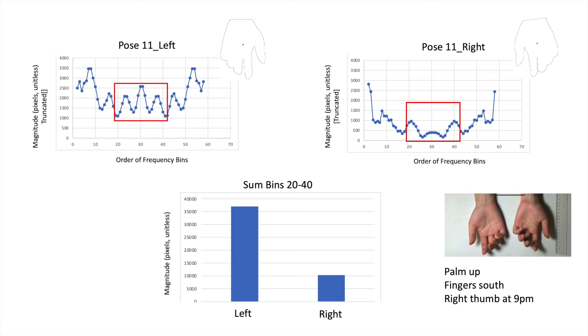For pose 11, what I did was I flipped my hands so the palms are up, fingers point south, and the right thumb is at 9pm. After outlining the hands and doing the analysis, the index shows that the right is still less than left.